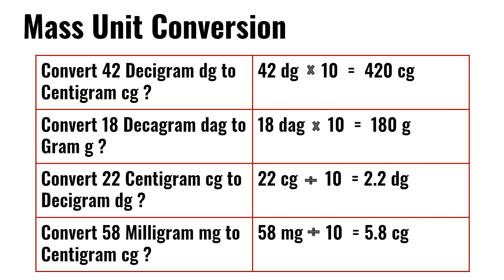Convert 18 decigrams to grams: 18 decigrams times 10 is 180 grams. Convert 22 centigrams to decigrams: 22 centigrams divided by 10 is 2.2 decigrams.